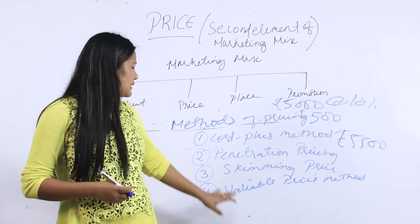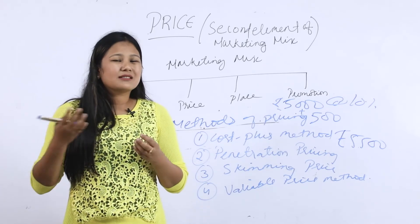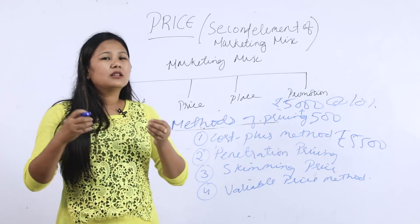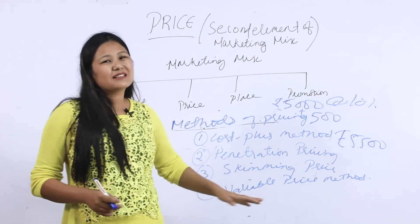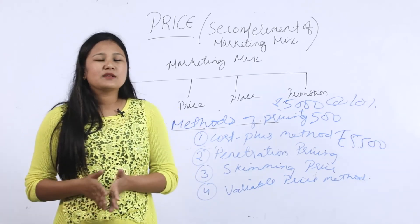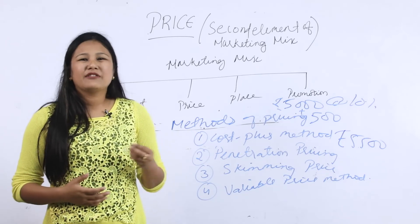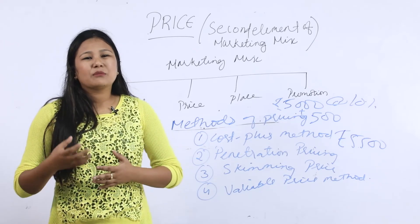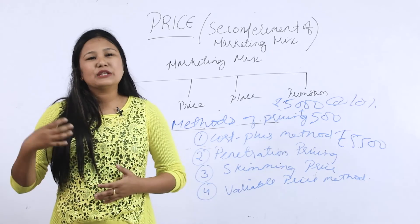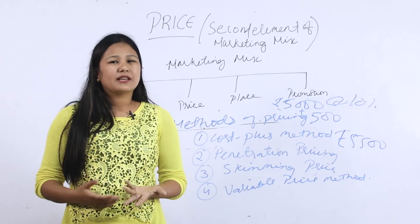Skimming pricing is the opposite of penetration pricing. In skimming pricing, the enterprise charges a very high price at the beginning, and then lowers the price when other producers enter the market with similar products. The last method is variable pricing. In variable pricing, entrepreneurs charge different prices to different customers. This is mainly practiced by vendors and hawkers, where negotiation and bargaining power plays a key role.